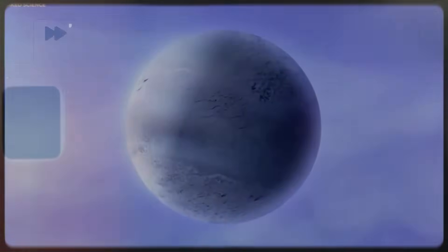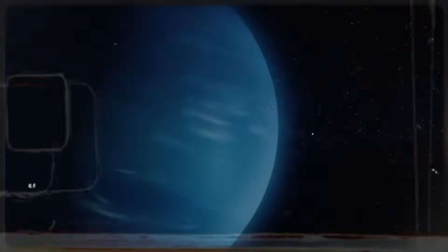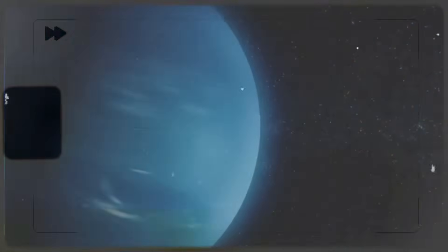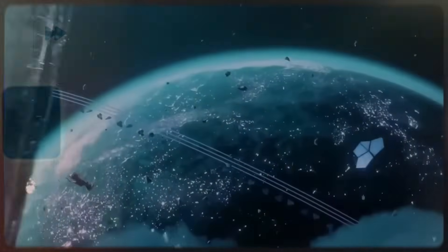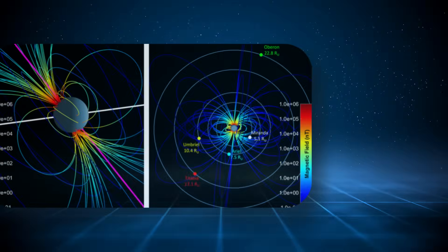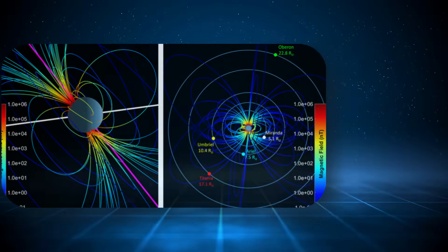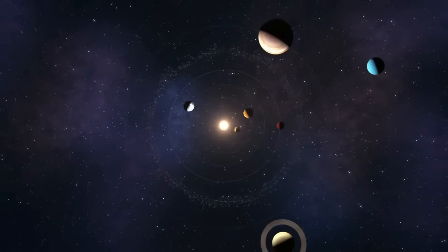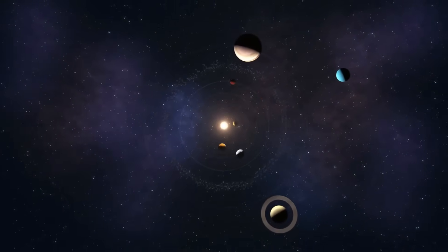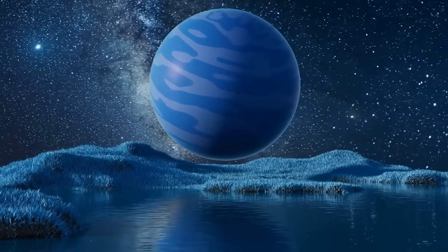For years, Neptune was somewhat relegated to the background, overshadowed by the closer grandeur of Jupiter and Saturn, or the drama surrounding Pluto's planetary status. But this revelation places Neptune at the heart of some of the most pressing questions in modern astrophysics. How do planets store and release energy over eons? What does magnetic asymmetry tell us about planetary evolution? How do distant planets shape the architecture of entire solar systems?